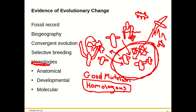Homology can be at the chemical or molecular level, the developmental level, or the anatomical level. This is an anatomical version of it. You need to understand this concept and be able to answer questions — for instance, what is the homologous structure on a cat compared to a whale's flipper? The answer would be the front paws.